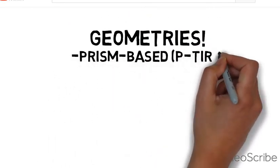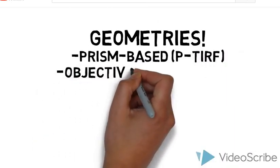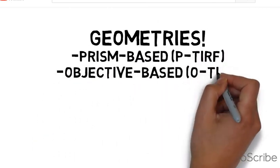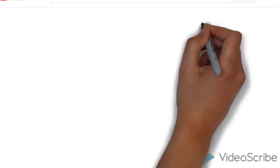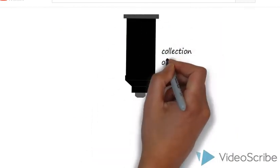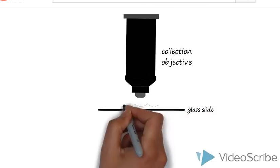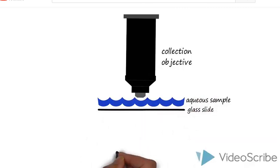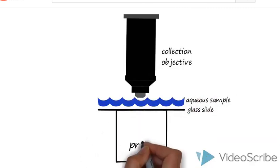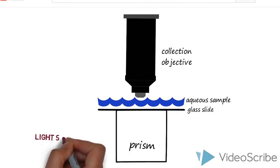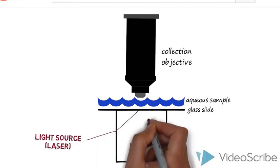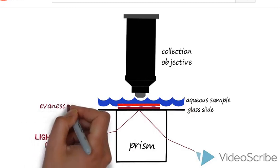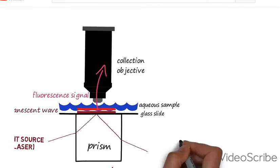Prism-based TIRF was the first type of geometry used for studying interfaces. This is traditionally built with a non-inverted setup, meaning that the objective lens that collects the signal is located above the specimen, which exists in an aqueous solution sitting on top of a glass surface. The excitation beam passes through a prism situated with the sample to hit the glass-water interface past the critical angle and create the evanescent wave.